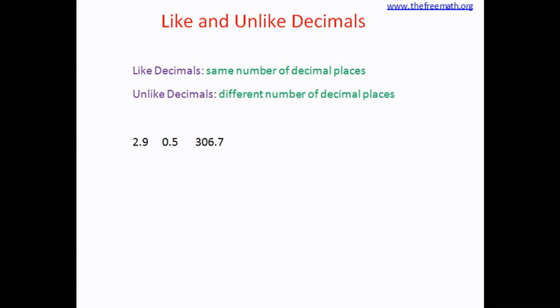Now let's look at this group of numbers. There are three decimals, and you can see that there is one decimal place in each of these numbers. That means these are like decimals.